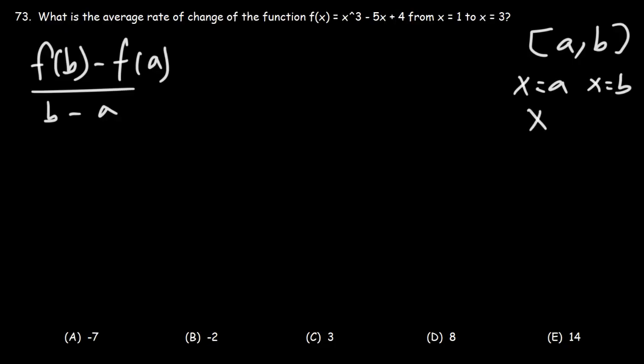So in this example, a is 1, b is 3. So this is going to be f of 3 minus f of 1 over 3 minus 1.